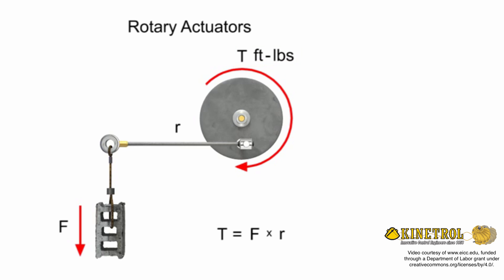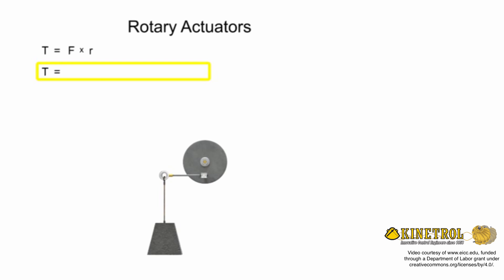For example, if a rotary actuator with an arm length or radius of 2 feet were used to lift a 200-pound weight, then the resultant torque required to accomplish the work would be 400 foot-pounds.